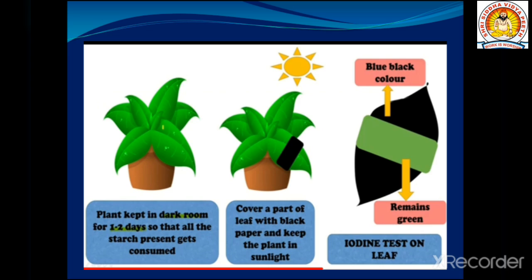After some days, if you test the leaf with an iodine test, the remaining green parts that were exposed to sunlight will turn blue-black, confirming photosynthesis occurred there, while the covered part will not show any color change.